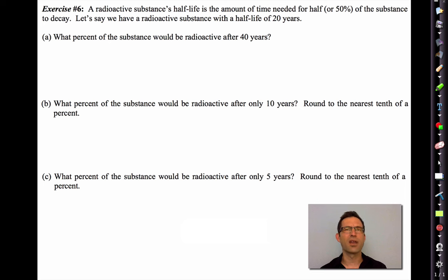One of the most common places that high school students run into percent decrease is when they talk about half-life in chemistry. Exercise 6 says a radioactive substance's half-life is the amount of time needed for half or 50% of the substance to decay. Let's say we have a radioactive substance with a half-life of 20 years. So that means every 20 years, we're going to have only 50% radioactivity that we had when we started.